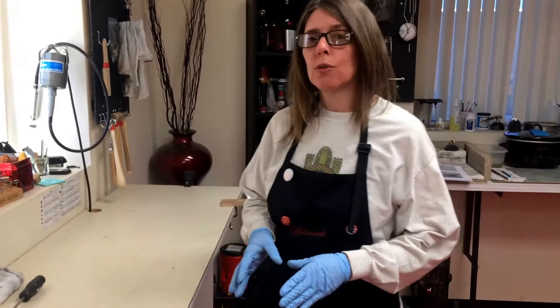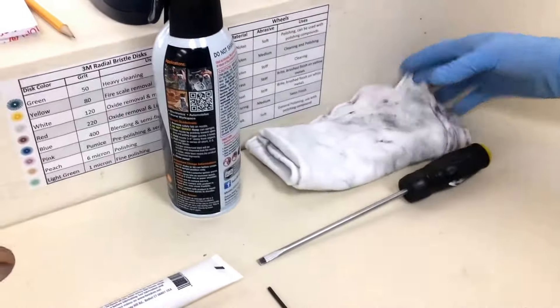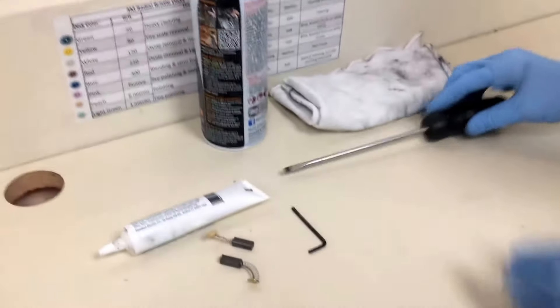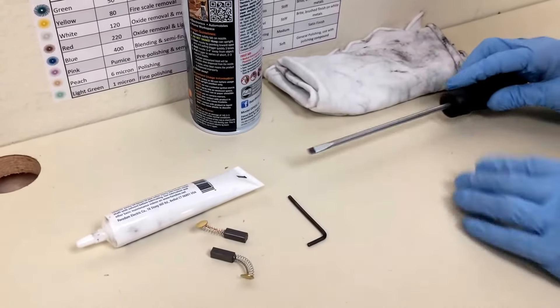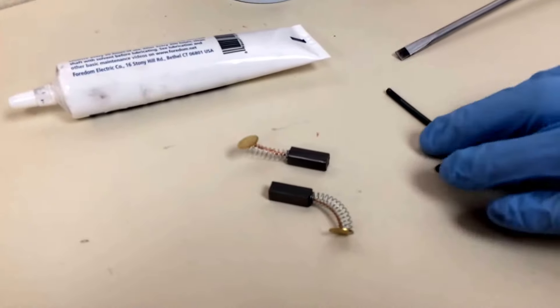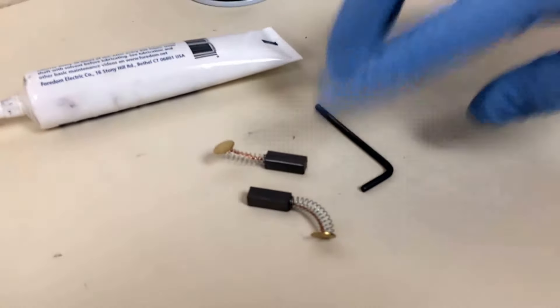So let me show you the tools you'll use. You'll want to dedicate a rag to this job, so I have one that we use every time we clean the flex shaft. We also have a can of air, a flathead screwdriver, a bottle of lubricant, and an allen wrench which comes with your flex shaft and replacement motor brushes.